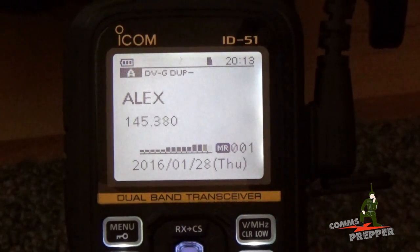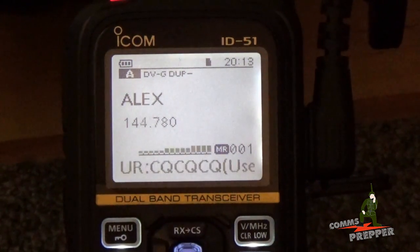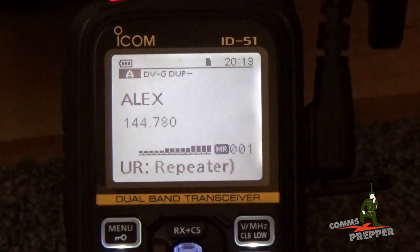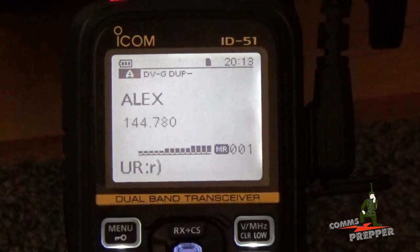Yeah, that is correct, KD4-BDM is currently talking on an ID 5100. Alright, on this end I have an ID 51 alpha plus handheld hooked up to an external antenna and I'm just running about 5 watts and I would say the repeater is about 8 miles away from this location.